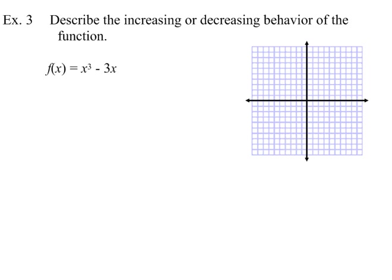Let's move to a different kind of problem. This third example says: describe the increasing or decreasing behavior of the function. You might want to pause and jot this down. What this means is: where is the graph going upward, where is it going downward, and is it ever constant — going horizontal?